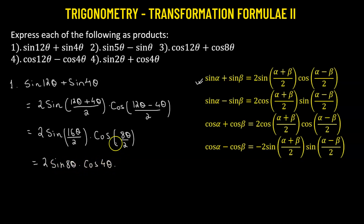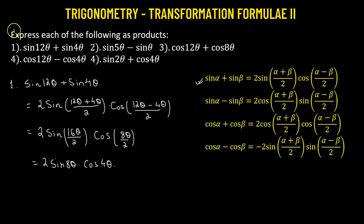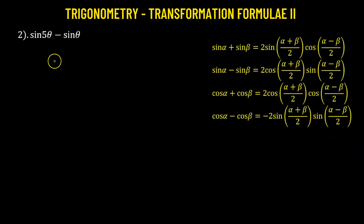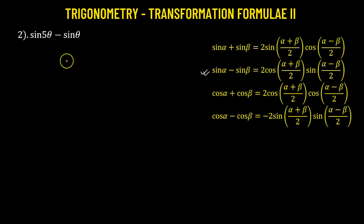This is the value for sine 12θ plus sine 4θ expressed as a product. Now let's go to problem number 2. We have a difference of two sine functions, so we'll be using this particular transformation formula.